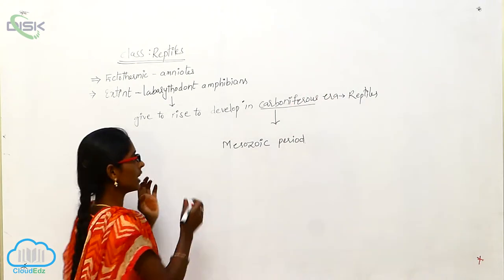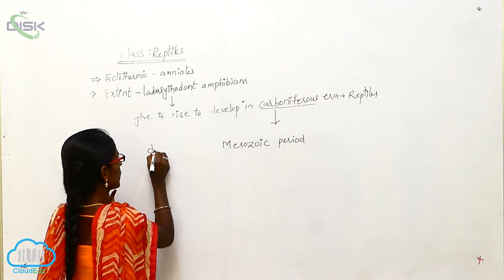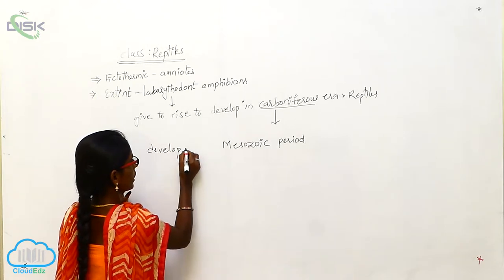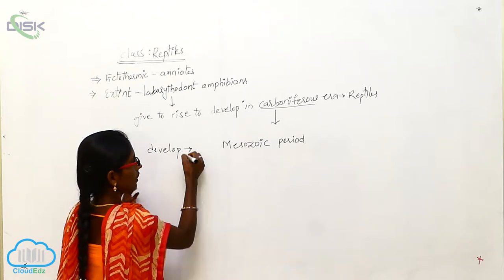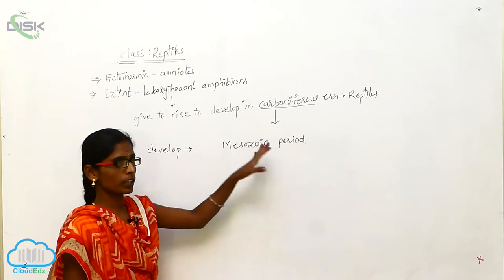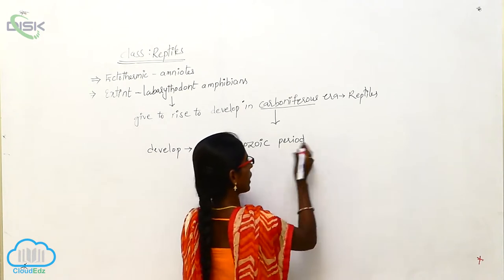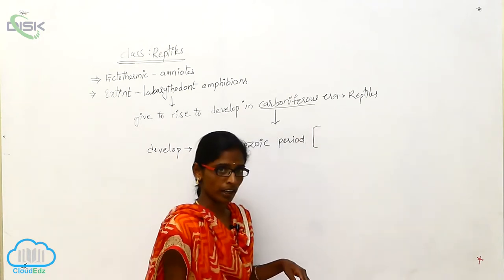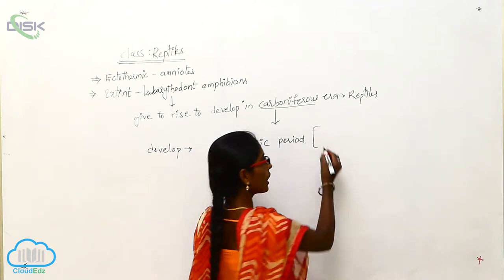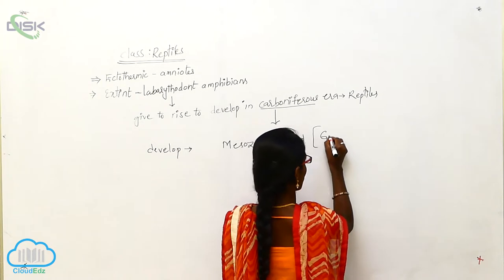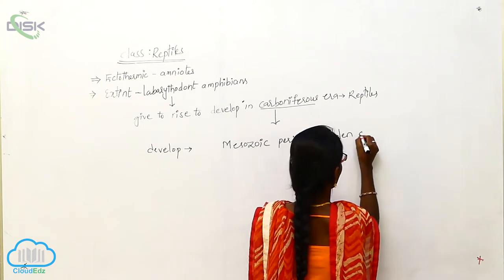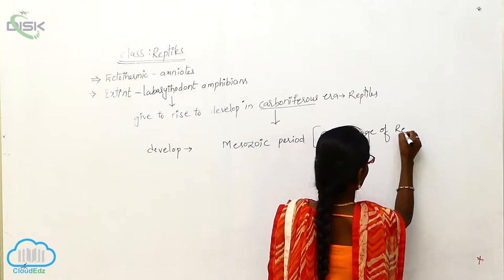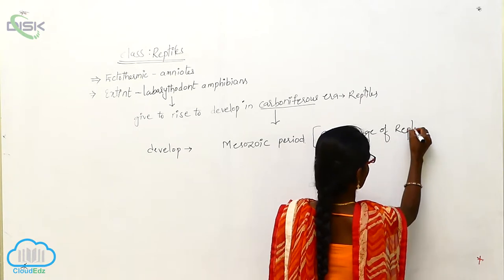The reptiles developed in the Mesozoic period. That's why this period is also called the golden age of reptiles.